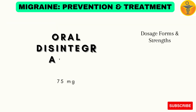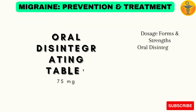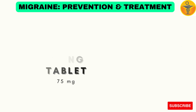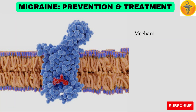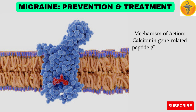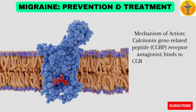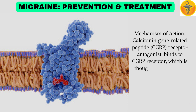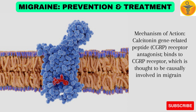Dosage Forms and Strengths: Oral Disintegrating Tablet (ODT) 75 mg. Mechanism of Action: Calcitonin Gene-Related Peptide (CGRP) Receptor Antagonist. It binds to the CGRP receptor, which is thought to be causally involved in migraine pathophysiology.